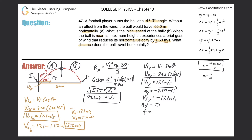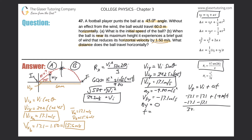Using the kinematic equation: final velocity equals initial velocity plus acceleration times time. So negative 17.1 equals 17.1 plus negative 9.80 times t. Subtracting 17.1 from both sides gives negative 34.2 equals negative 9.80t. Dividing both sides by negative 9.80, time equals 34.2 divided by 9.8, which works out to 3.49 seconds.